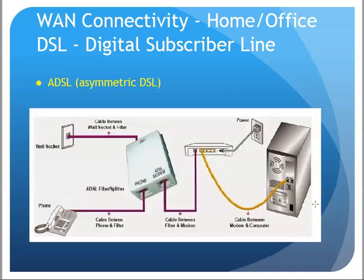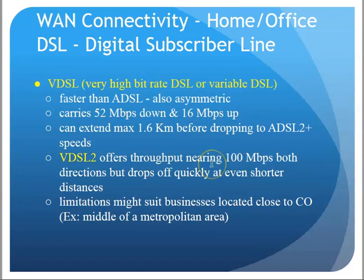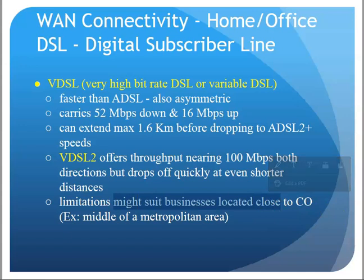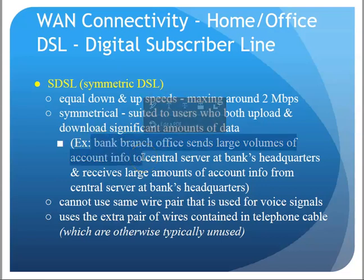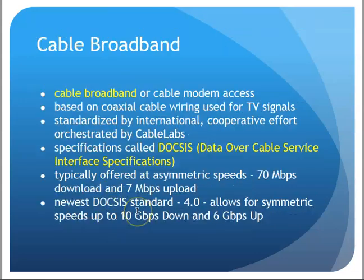VDSL — Very High Bit-rate or Variable DSL — offered 50–52 Mbps down and 16 Mbps up, though you needed to be a bit closer than ADSL. This was suitable for businesses, especially in metropolitan areas. SDSL — Symmetric DSL — offered equal down and up speeds of around 2 Mbps in each direction, useful for bank branch offices that needed to both download and upload data. SDSL used all four wires in the phone cable rather than just two.